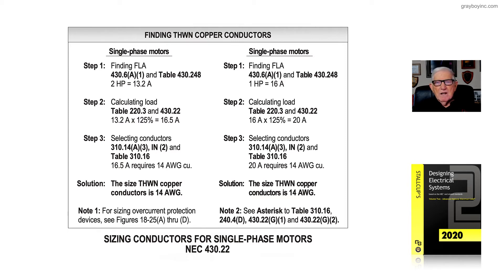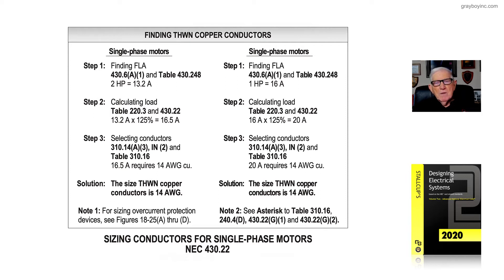Some designers call that item 2. After the calculation of 125% times the full-load current rating selected from Table 430.248, we use that total amp rating to go to Table 310.16 and select our conductors.